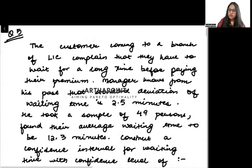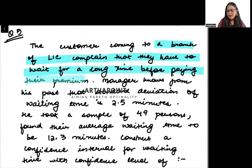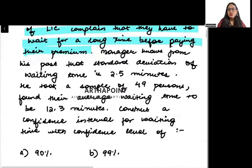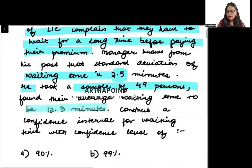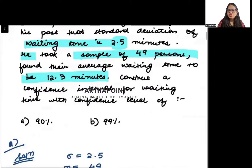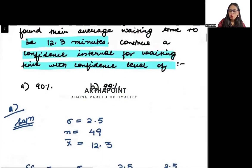Look at the first question. This came in 2022. So it says the customer coming to a branch of LIC complain that they have to wait for long time before paying their premium. Manager knows from his past that standard deviation of waiting time is 2.5 minutes. He took a sample of 49 persons and found average waiting time to be 12.3 minutes. Construct a confidence interval for waiting time with the confidence level of 90% and 99%.